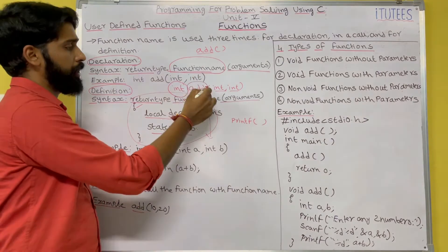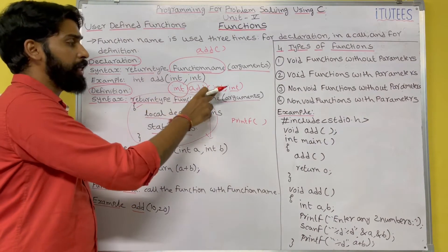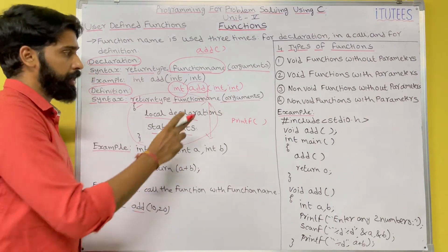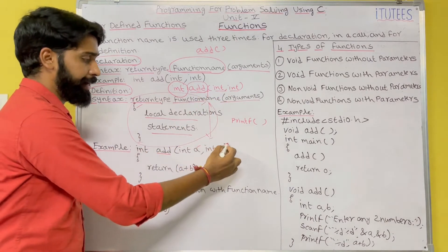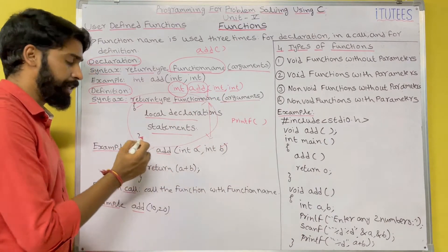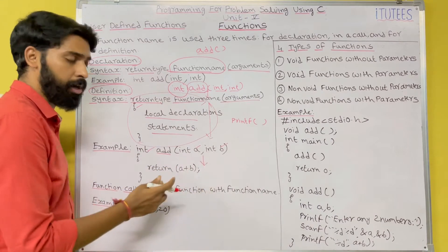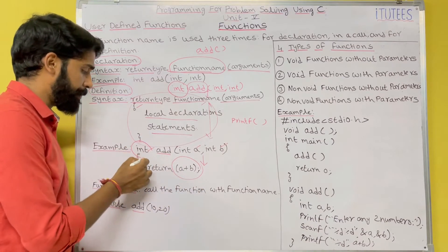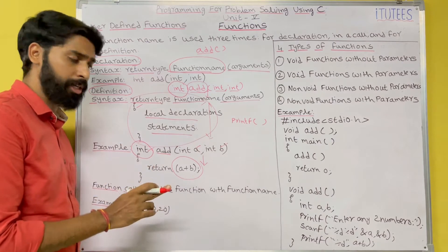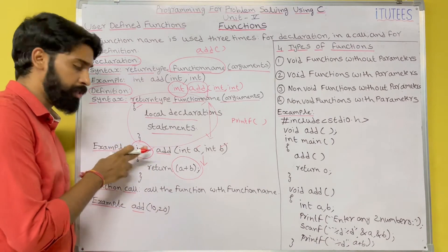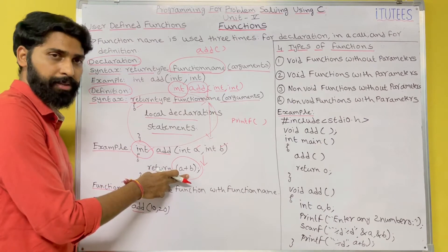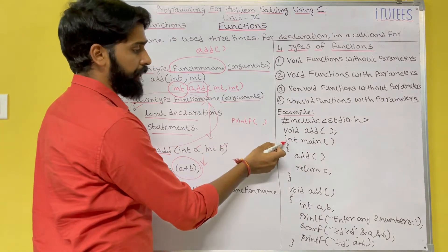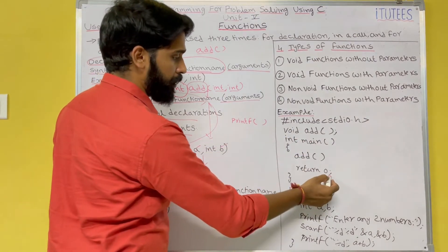For example, a function 'add' with return type integer and arguments int a, int b. I define the function as: int add(int a, int b), and inside the block I write 'return a + b'. The return statement is used to return values. When you specify a return type, at the end of the function you return a value. You may have observed that in many programs we write 'int main' and at the end write 'return 0' — this is the same concept.